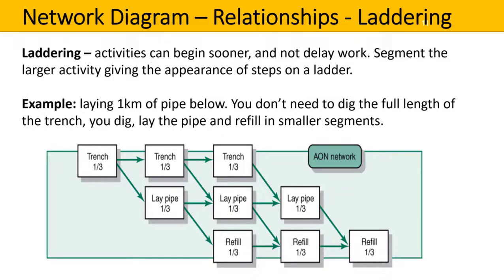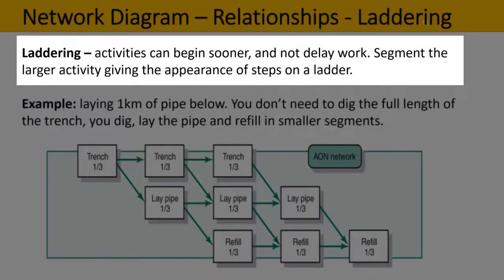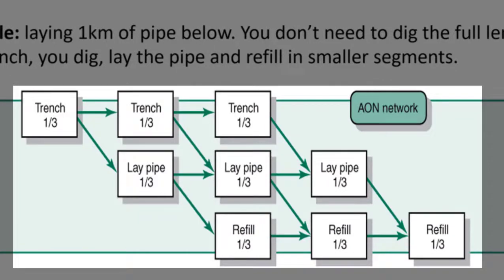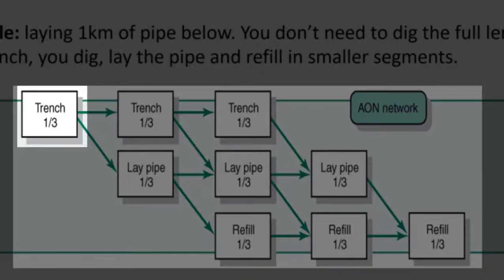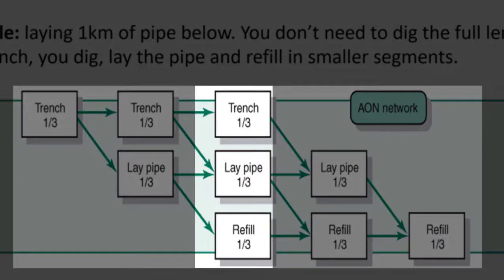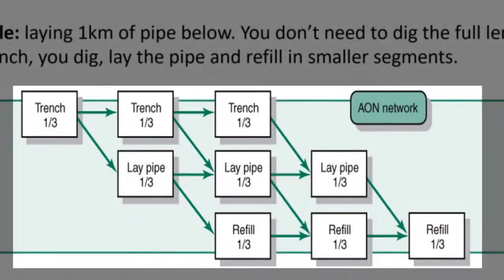Here we can use laddering. Activities can begin sooner and not delay work. You can segment the larger activity, giving the appearance of steps on a ladder. Here is our example of laying one kilometre of pipe. You don't need to dig the full length of the trench — you dig, lay the pipe and refill in smaller segments. We have split this into three parts. We start by digging the first part of the trench. When finished, we start digging the next third while laying pipe in the first third already dug. When both are done, we dig the final part while laying pipe in the second part and refilling the first, and so forth — a clear progressive overlap.